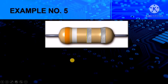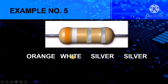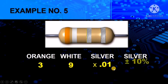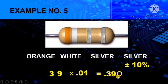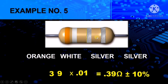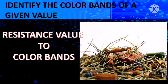Next example: orange, white, silver, and silver. Orange is a value of 3, white is 9, silver as the multiplier is times 0.01, while the other silver as the tolerance is plus or minus 10%. Putting the first and second digit together and multiplying by 0.01, the answer is 0.39 ohms plus or minus 10%. Remember: if the multiplier is silver, there should be a decimal point before the first digit.